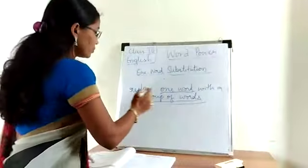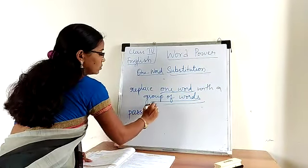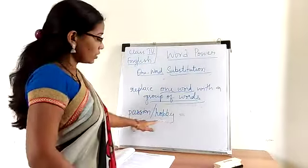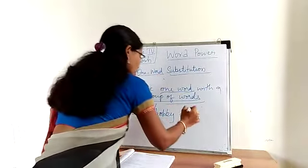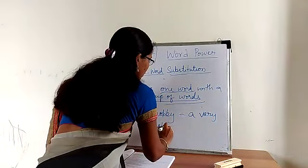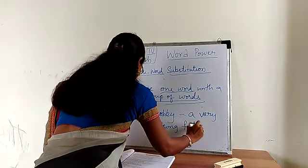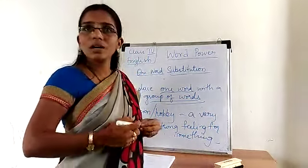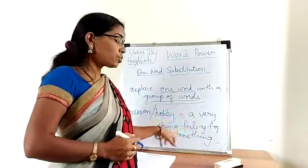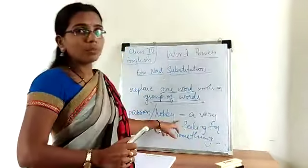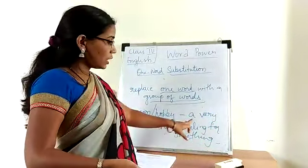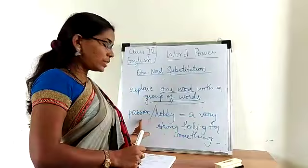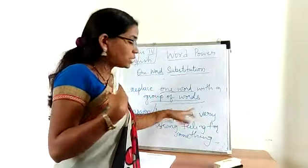Now I will tell you one example. What is passion? Passion is nothing but hobby. This is one word. A group of words for this is: a very strong feeling for something. Passion or hobby is a very strong feeling for something. Here we have more than five words, so these five words we are replacing with one word — that is passion. We can also replace these words with hobby.